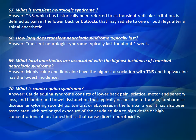Question 70: What is cauda equina syndrome? Cauda equina syndrome consists of lower back pain, sciatica, motor and sensory loss, and bladder and bowel dysfunction that typically occurs due to trauma, lumbar disc disease, ankylosing spondylitis, tumors, or abscesses in the lumbar area. It has also been associated with prolonged exposure of the cauda equina to high doses or high concentrations of local anesthetics that cause direct neurotoxicity.